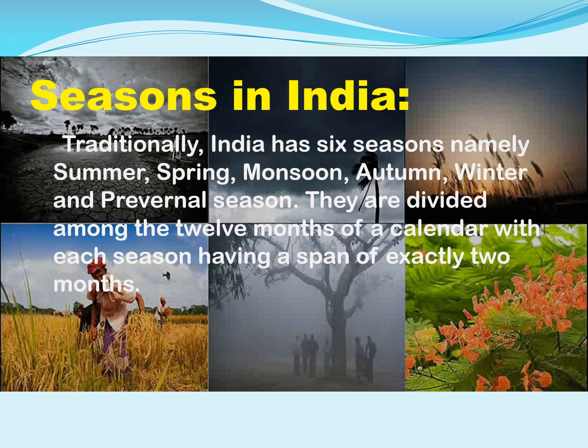Seasons in India. Traditionally, India has six seasons: summer, spring, monsoon, autumn, winter, and prevernal season. They are divided among the twelve months of a calendar, with each season having a span of exactly two months.